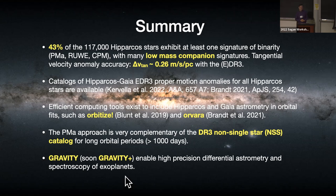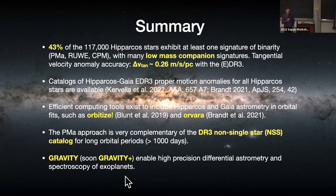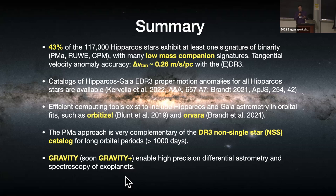An online question asks what code is used to do the astrometric fits producing the companion mass versus orbital radius plots. The code used is not public, but it's not very complicated — the same kind of code as used by others to compute differences between proper motions.